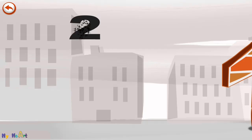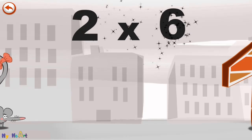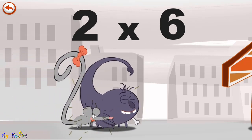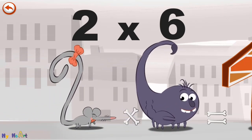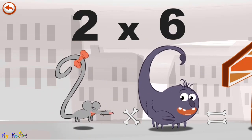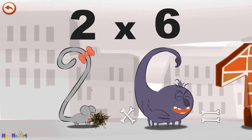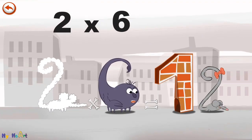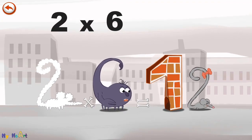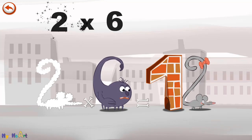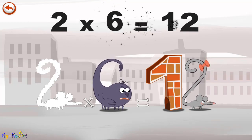What's the story of 2 times 6? When Two Squeaks sees Scorpius 6 the Scorpio, she is frightened he will sting her. She is terrified and runs away. She scurries down a mouse hole and hides behind a wall in the shape of a 1. 2 times 6 is 12.